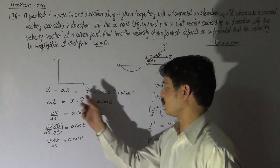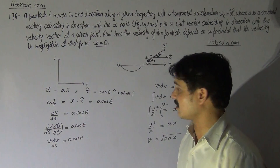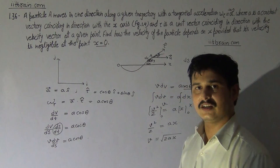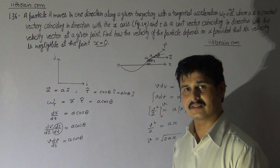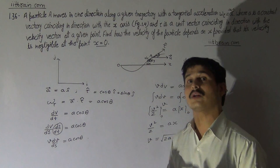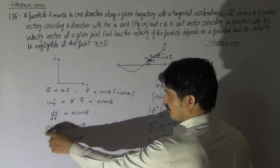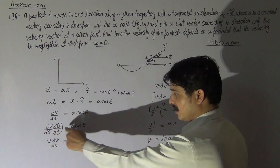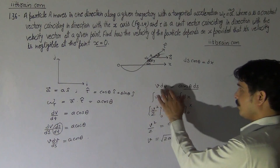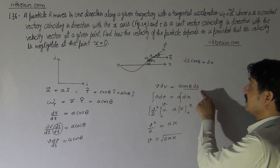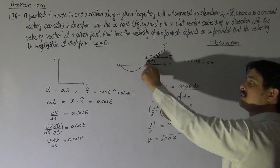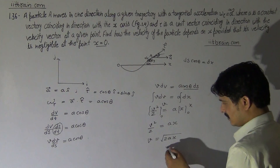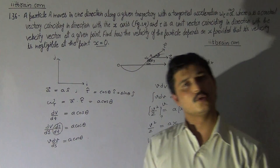To summarize: first, represent the acceleration and τ in terms of î and ĵ components, calculate the value of A·τ, and then use dV/dt as the rate of change of speed (tangential acceleration), applying the chain rule dV/dS · dS/dt = A cosθ. Then V dV = A cosθ dS, and cosθ dS = dX, giving V dV = A dX. Integrating gives V = √(2AX). Thank you.